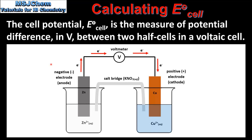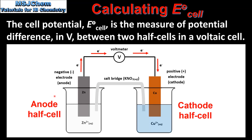Here we have an example of a voltaic cell made from a zinc half cell and a copper half cell. When connected via a salt bridge and an external circuit, the electrons flow from the zinc half cell to the copper half cell. This makes the zinc half cell the anode and the copper half cell the cathode.